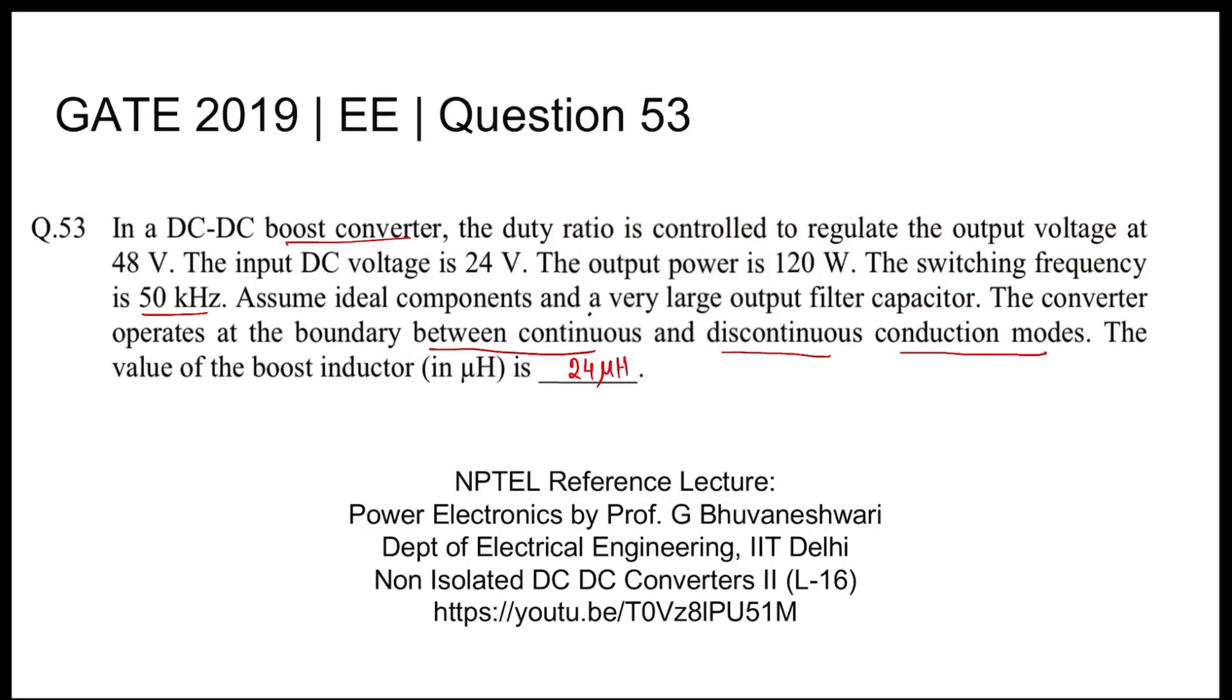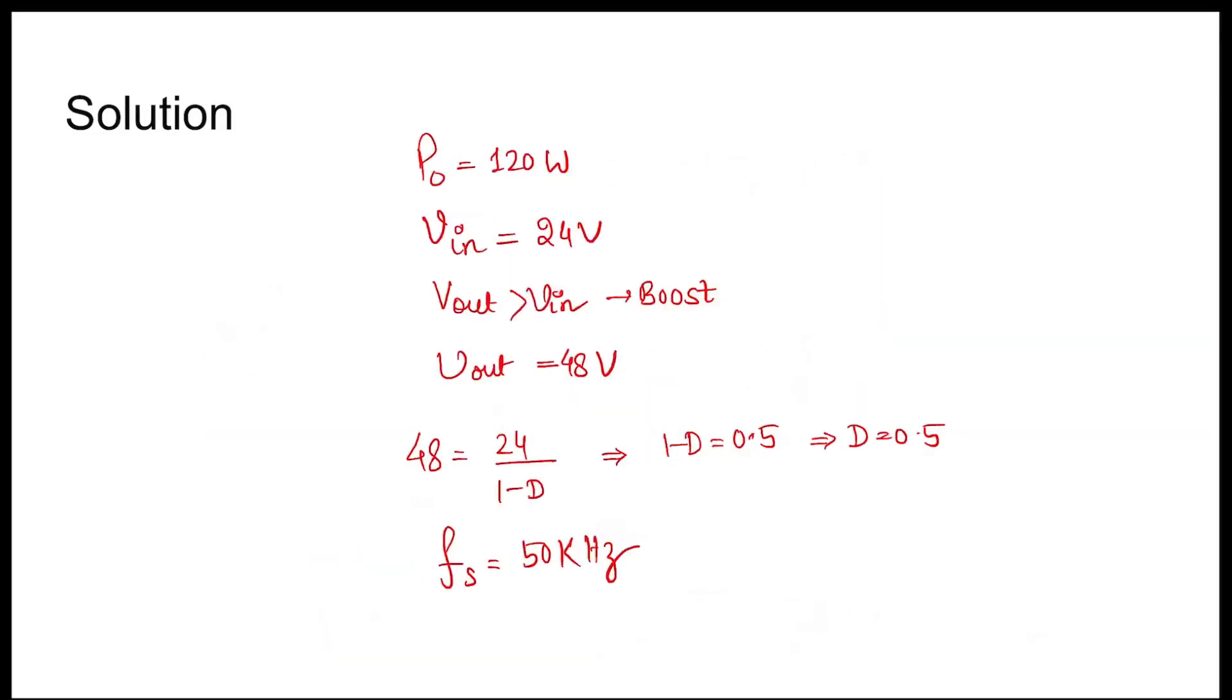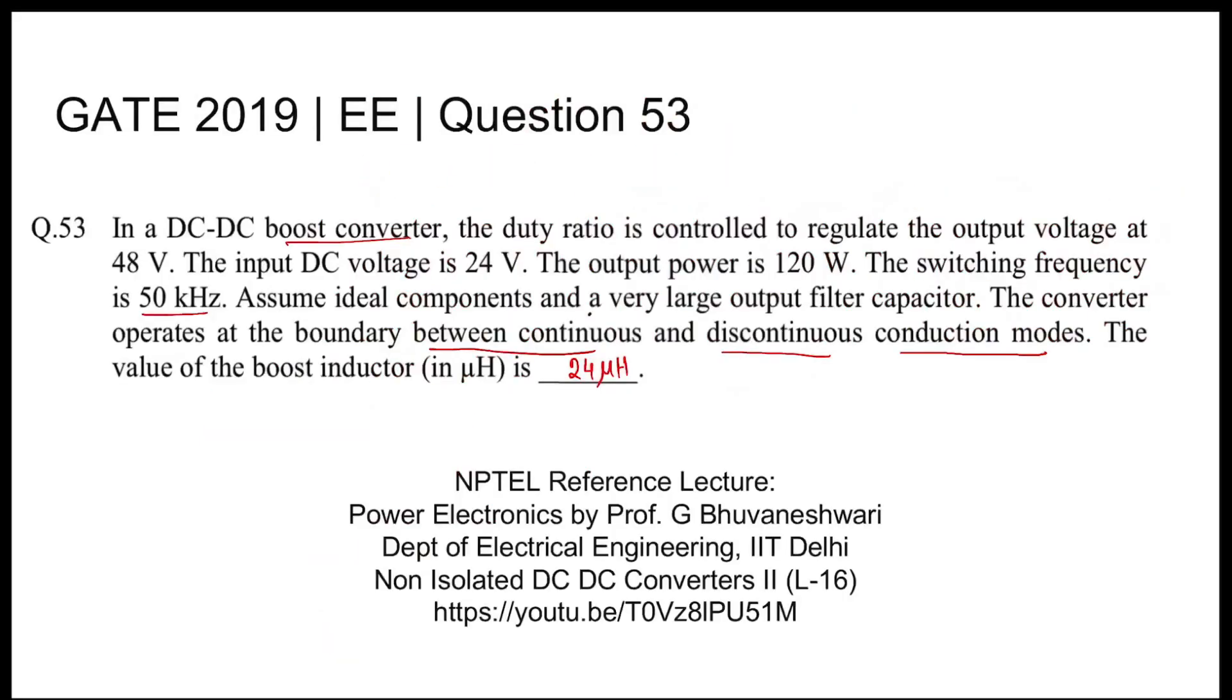Right, so 24 microhenries is the answer of the critical inductor that we should use in the design of the boost converter such that with this condition it is operating between continuous and discontinuous conduction modes. So value of critical inductor is 24 microhenries. So this is the answer for this question. Thank you.